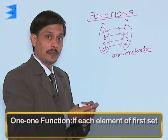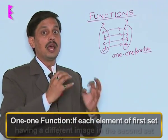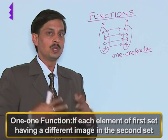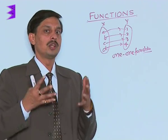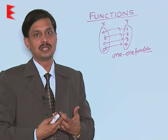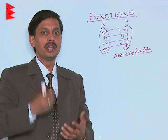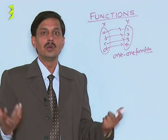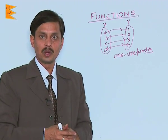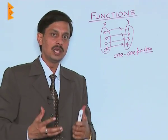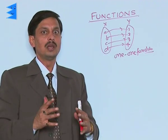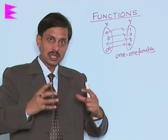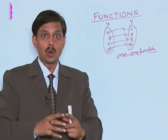What is a one-one function? If each element of the first set has a different image in the second set, it is one-one. Suppose you are going to see a movie — in a cinema hall, it is not possible that two persons sit on one seat or two tickets are sold for one seat. This is the best example of a one-one function. But when you are enjoying a farewell party at school, students may sit together as per their friendship — two or more students on one chair. This kind of situation tells us about many-one.